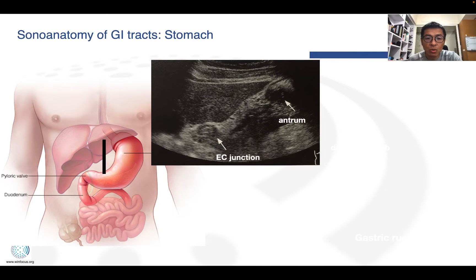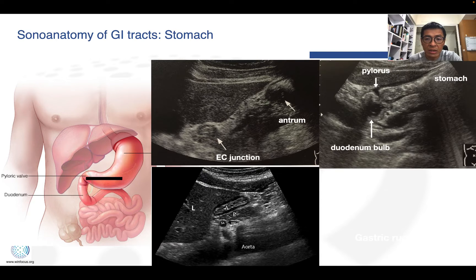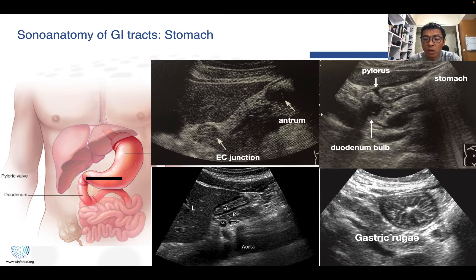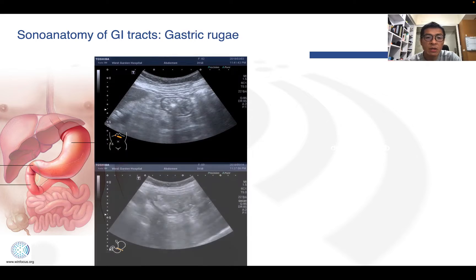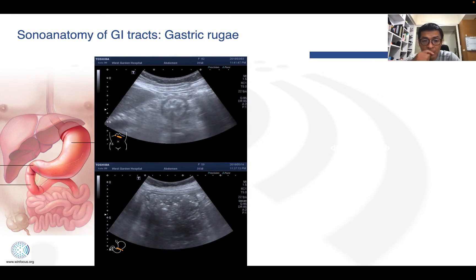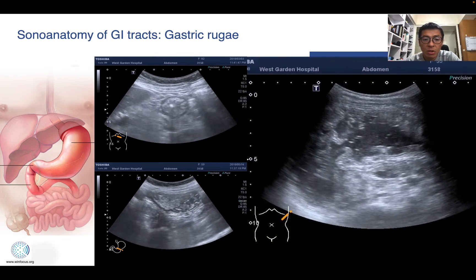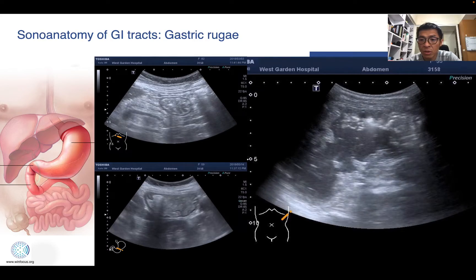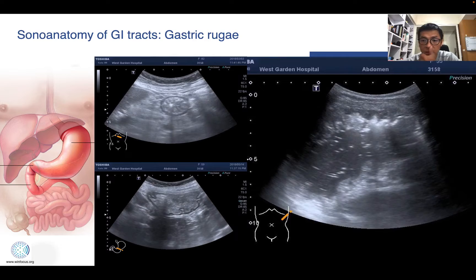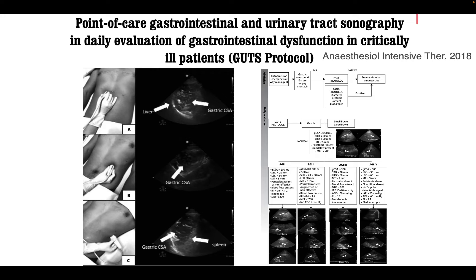Move the transducer downward a little bit. We can see the antrum rotated. It is also possible to see the antrum, pylorus, and the duodenal bulb and second portion. It is also possible to observe typical gastric rugae, especially when there is nothing inside the stomach. When the stomach is distended by fluid, it is also possible to observe detailed information of the GI more. Some protocols incorporate gastric evaluation in daily care for critically ill patients.